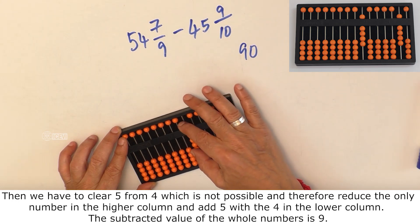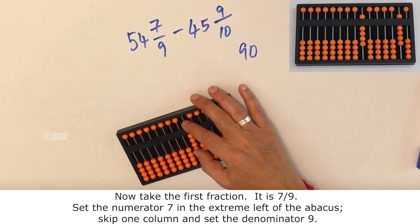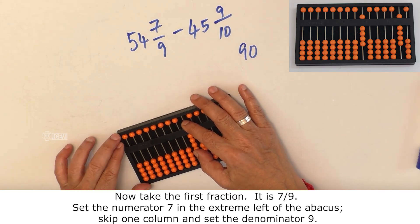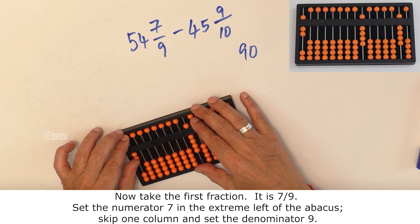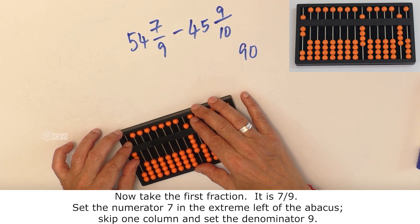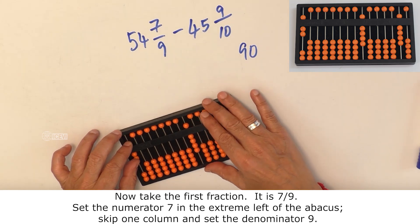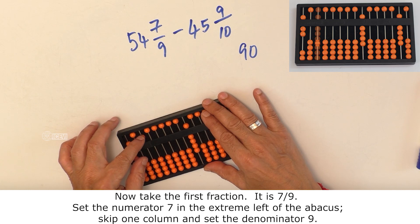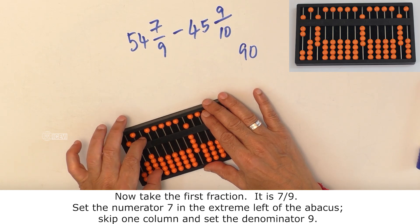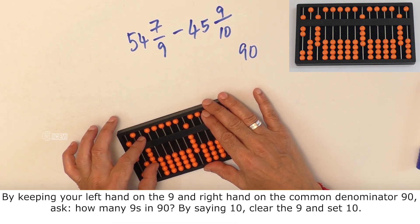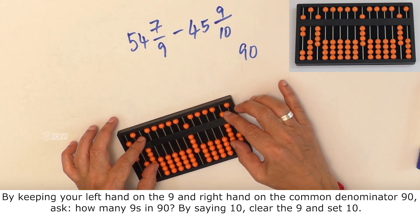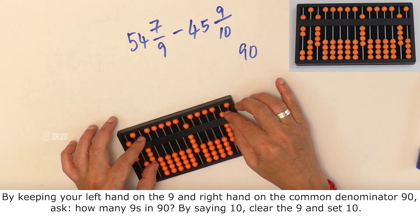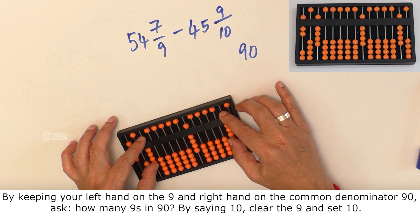Now let us take the first fraction. It is 7/9. Set the numerator 7 in the extreme left of the abacus. Skip 1 column and set the denominator 9. By keeping your left hand on the 9 and right hand on the common denominator 90, ask how many 9's in 90.